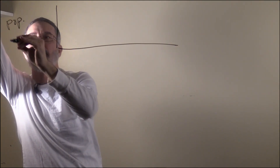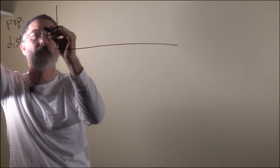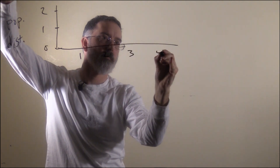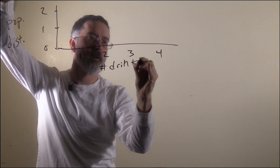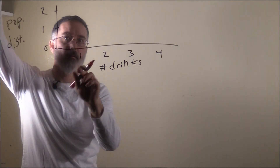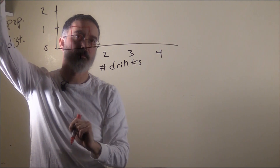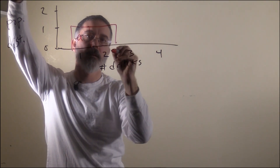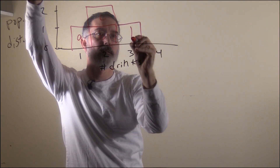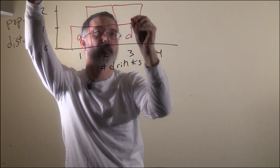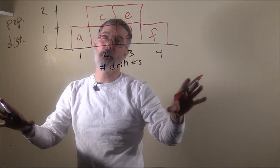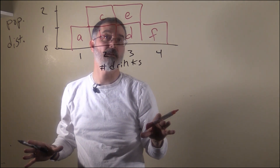This up top will be the population distribution — just a regular frequency distribution. We will say this is the number of drinks the people in our population have had so far today. Person A has had one drink, Person B has had two drinks, Person C also has had two drinks, Person D has had three drinks, Person E has had three drinks, and Person F has had four drinks. This is the total population for this simplified example.